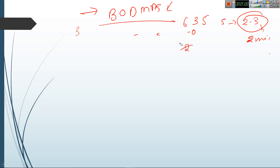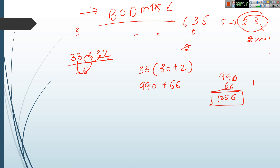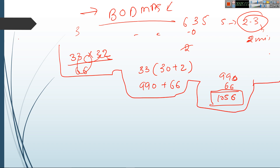One more tip: if you have to multiply a complex number, you can divide that number into two parts. For example, to multiply 33 by 32, write it as 33 multiplied by (30 plus 2). Solve: 33 times 30 is 990, and 33 times 2 is 66. Add them: 990 plus 66 equals 1056. So you can divide a number into two parts and solve it quickly. These tricks are very important in the banking prelims exam where time is everything.